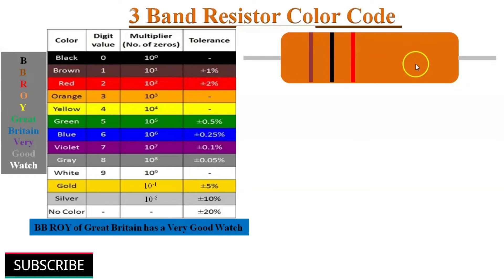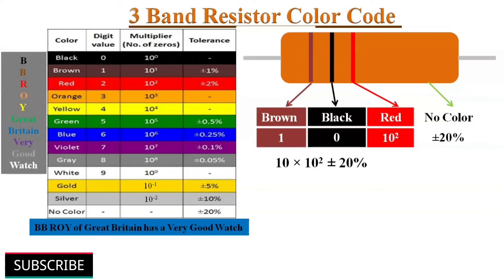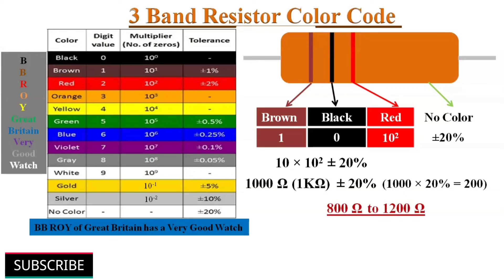If the fourth color band or tolerance band is left blank, it is considered a 3-band resistor, and the tolerance value is assumed to be ±20%. Here the first two color bands are brown and black: brown's value is 1 and black's value is 0, giving the two-digit number 10. The multiplier color band is red, with a value of 10 to the power of 2. So the resistance value of this 3-band resistor is 1 kilohm ±20%, meaning the resistance may vary ±200 ohms — between 800 ohms and 1200 ohms.